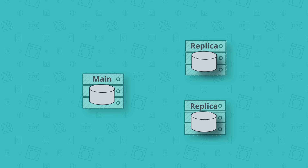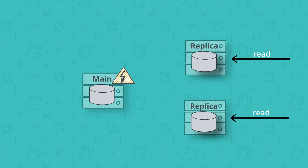Now we get to the most critical situation: your one and only main node goes down due to a hardware failure. Thanks to replication, the system remains able to serve read requests, which is great since most modern applications are very read-intensive — they have a high proportion of reads compared to writes. But the system has lost all ability to serve write requests, and that's really bad because it directly affects the user experience.